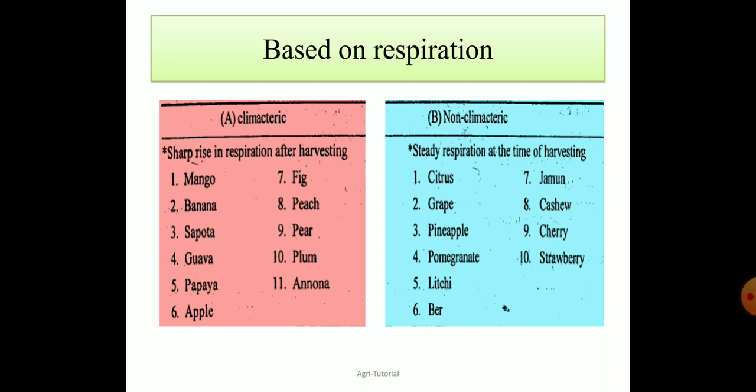Further non-climacteric fruit examples include: lychee, ber, jamun, cashew, cherry, and strawberry. You should pause the video and note down which fruits are in which categories — you must know them.